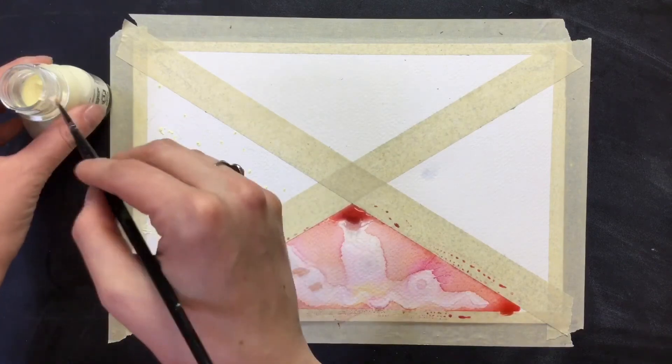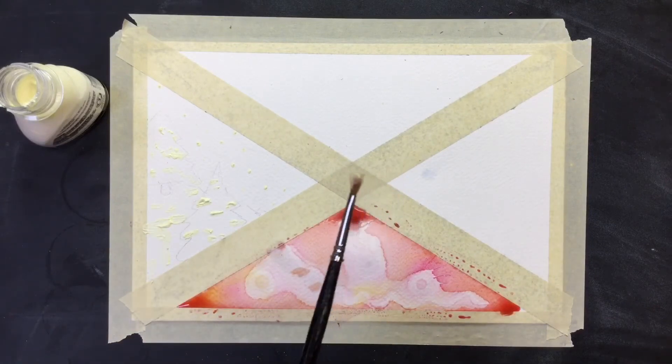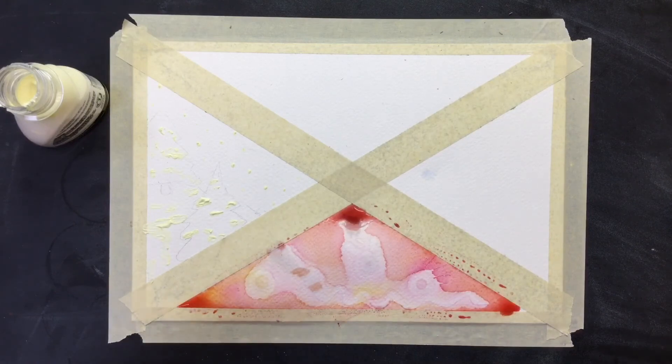Before I add my color, I have to let that masking fluid dry, otherwise it's just going to smear. That'll take maybe 10 to 15 minutes. Wash your junk brush out, and then you can return the masking fluid up front.